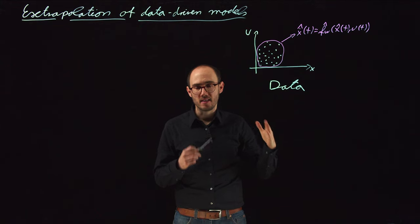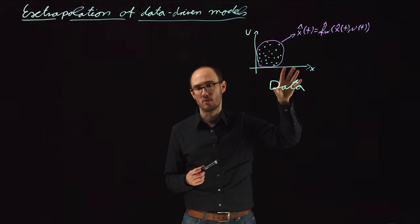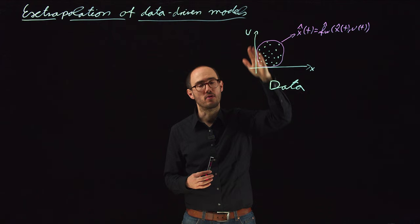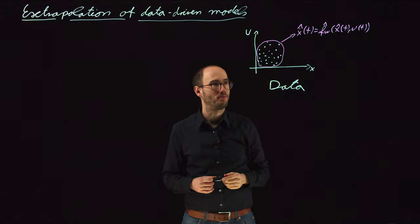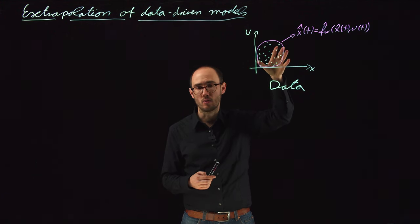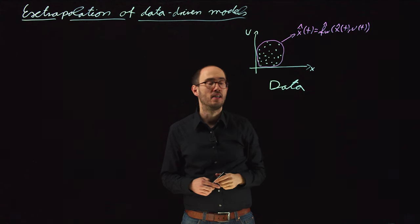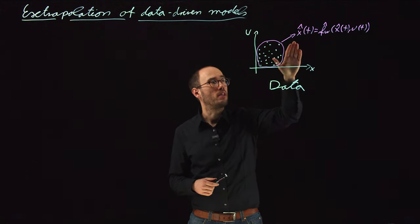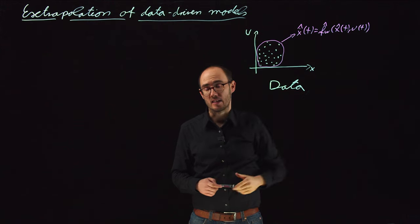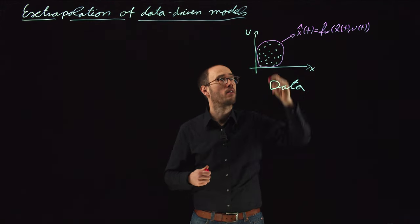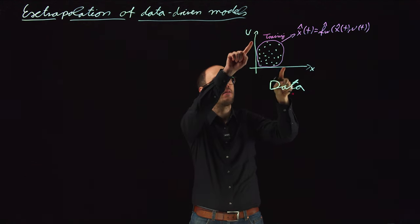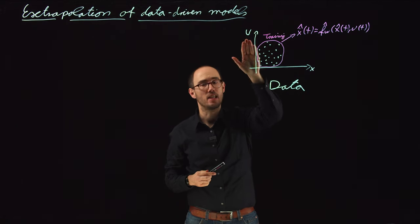The standard system identification approach is of course that we go to some test bench or we observe some field data regarding state X and inputs U of the system. And what will happen is we will observe some data, so this is just like a cartoonic representation of some state and input transitions, and we utilize this input data in order to fit our model, for example here a NODE style data-driven model. So this would be based on training data.